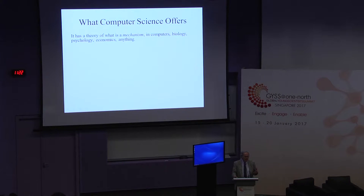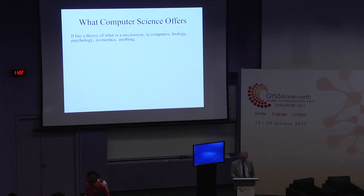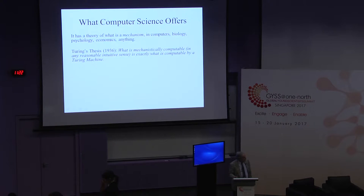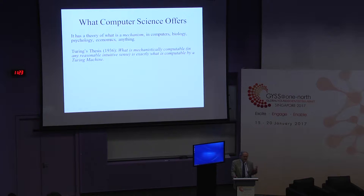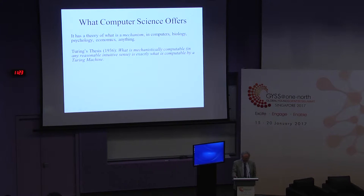For example, in the 19th century, when people discussed Darwinian evolution, the question was: was that a mechanism? Computer science offers a theory of mechanisms, and its most famous format is, of course, that of Turing, who suggested a very particular definition of mechanism — a Turing machine. He also hypothesized that everything which is a mechanism, something which doesn't require creativity, a routine or logical prescription, is equivalent to a Turing machine. So it's a definition of the space of all mechanisms in computers, biology, psychology, economics — everything.